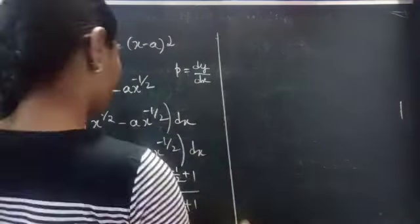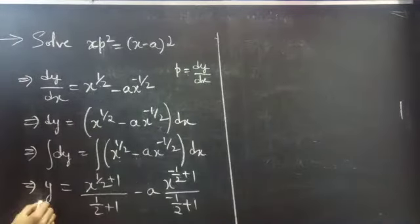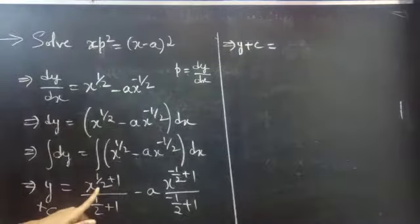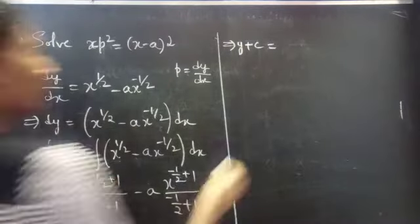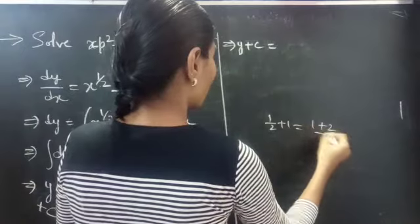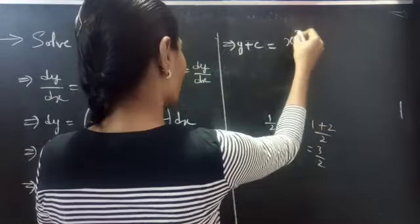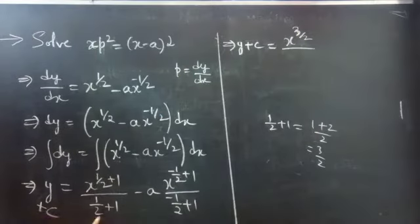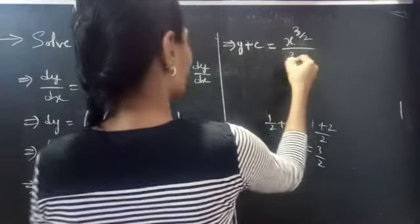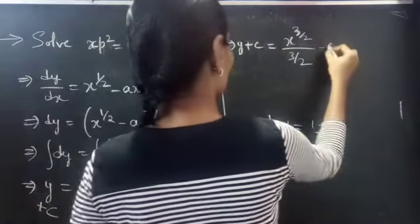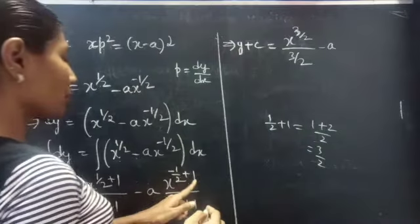Then y plus c equals x power (1 by 2 plus 1). 1 by 2 plus 1 is (1 plus 2) by 2, which equals 3 by 2. So you get x power 3 by 2 by 3 by 2, minus a into x power (minus 1 by 2 plus 1). So you can write this as 2 by 3 into x power 3 by 2, minus a into 2 by 1 into x power 1 by 2.